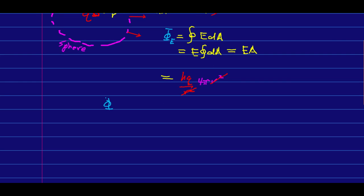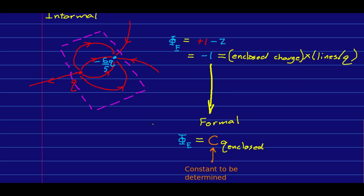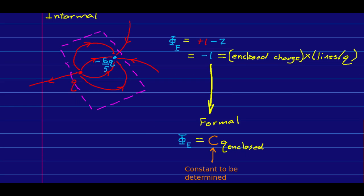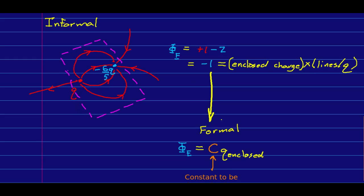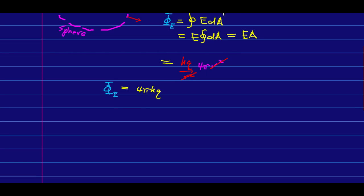And so there we have it. Our flux is 4πkq, and q is the enclosed charge. All we were looking for was that the flux had to be some constant times the enclosed charge. And so this 4πk is the constant we were looking for.